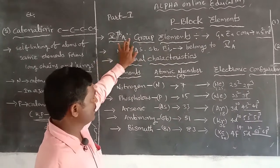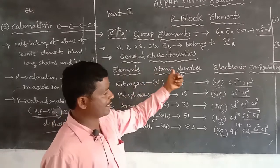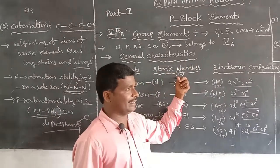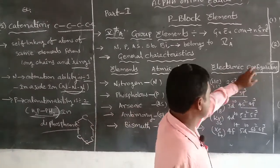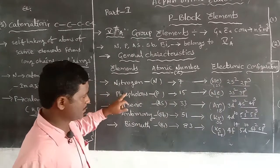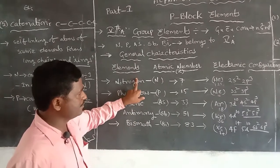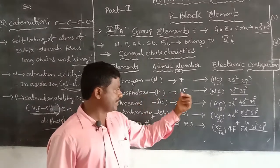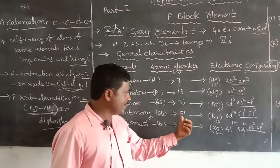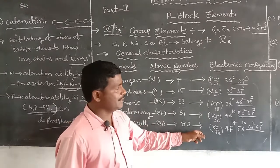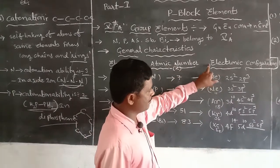The general characters of Group 5A elements include: element name, atomic number (indicated as Z), and electron configuration. The elements are nitrogen (atomic number 7), phosphorus (atomic number 15), arsenic (atomic number 33), antimony (atomic number 51), and bismuth (atomic number 83).